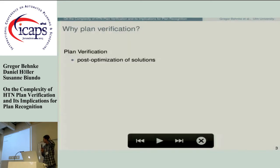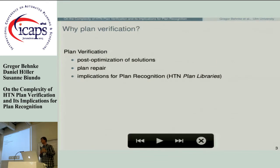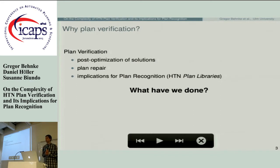The next question one could obviously pose is: why should we do plan verification? What's the benefit of it? The first benefit is post-optimization. If your planner has produced some plan, you may want to change it — perhaps remove a superfluous action, or swap one action with another. You still have to check whether the result is still a solution. A similar problem arises with plan repair: something unforeseen happens during execution, you change the plan, and in HTN planning you still have to verify whether it remains a procedural solution. It also has implications for plan recognition, since HTN plan libraries are commonly used to represent the possible plans a user might execute.